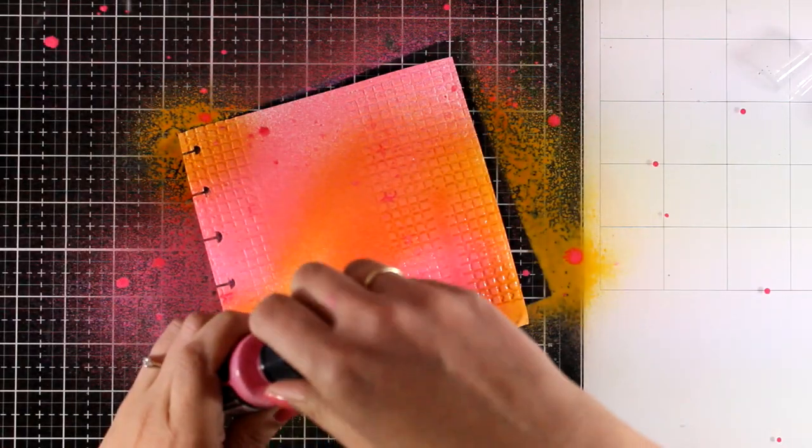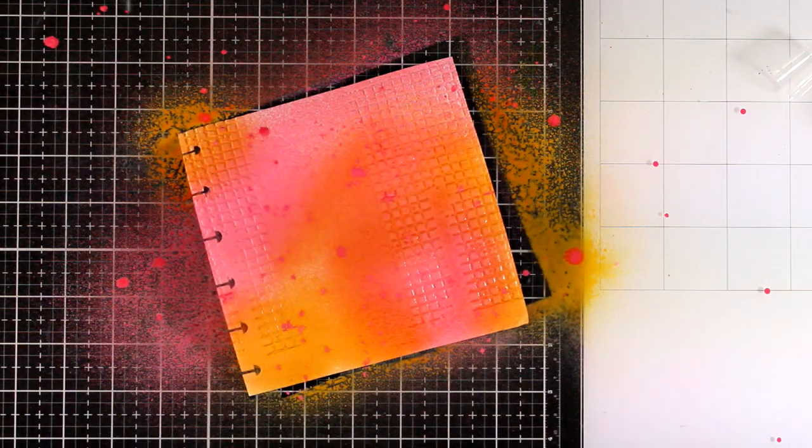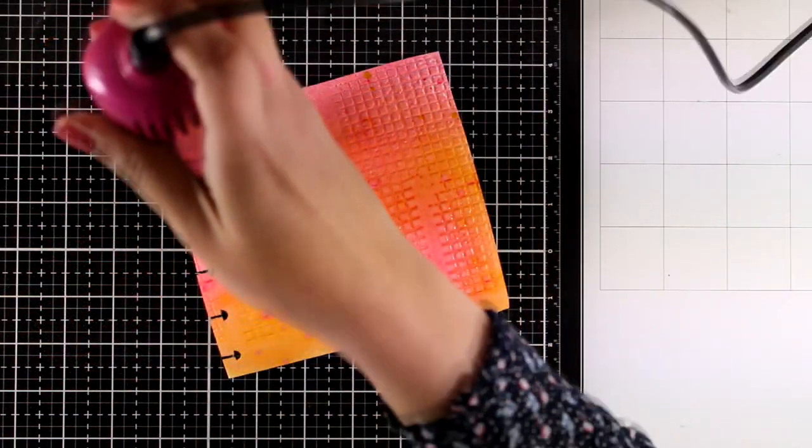Now of course you can build up your color as much as you like. You can see here I'm using the nozzle to add some splashes with those two colors and now I'm going to use my heat gun.